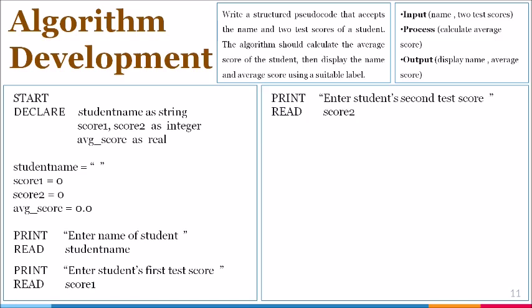Our third prompt statement is asking for the second test score. This reads, enter student's second test score, followed by the variable score two, will be used to accept the entry made by the user.